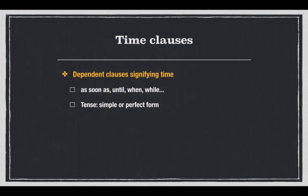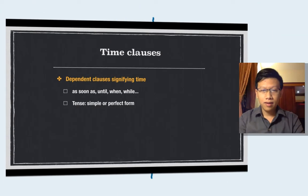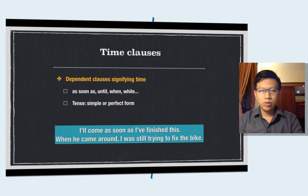Now, to the time clauses. A time clause is a dependent clause, meaning it cannot stand alone with meaning. The time clause certainly signifies time in a sentence. Some time signifiers are: 'as soon as,' 'until,' 'when,' 'while,' and others. We remember that the tense in the time clause is normally of simple or perfect form rather than of continuous form. For example: 'I'll come as soon as I finish this' — present simple in the time clause. And 'when he came around, I was still trying to fix the bind' — past simple.